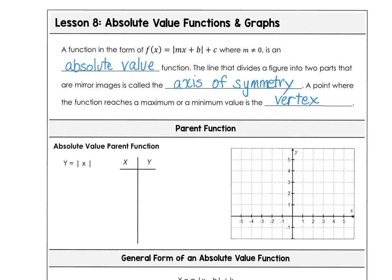In our parent function, we can graph that by making a table with x values from negative 3 to positive 3. The absolute value of each of those is going to be a non-negative number, so the first half goes off to the left and the second half goes off to the right, making a V-shaped graph.